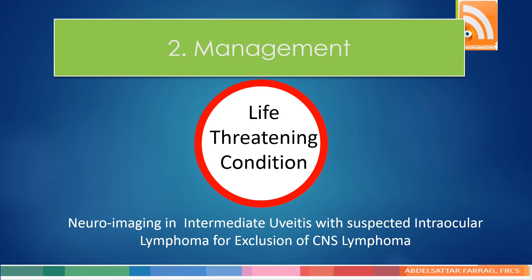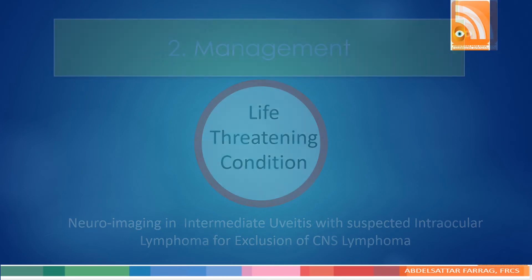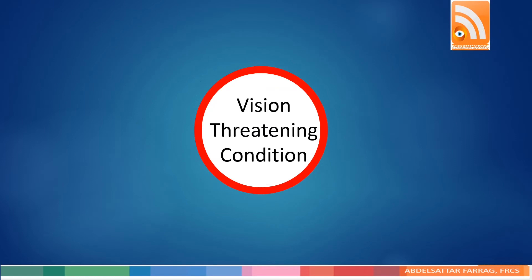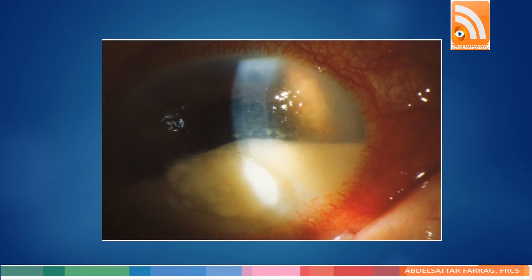The second is missing the exclusion of vision-threatening conditions in the differential diagnosis. For example, severe keratitis is a vision-threatening condition, but endophthalmitis should be shown in your differential diagnosis because it is more aggressive and more serious than keratitis.